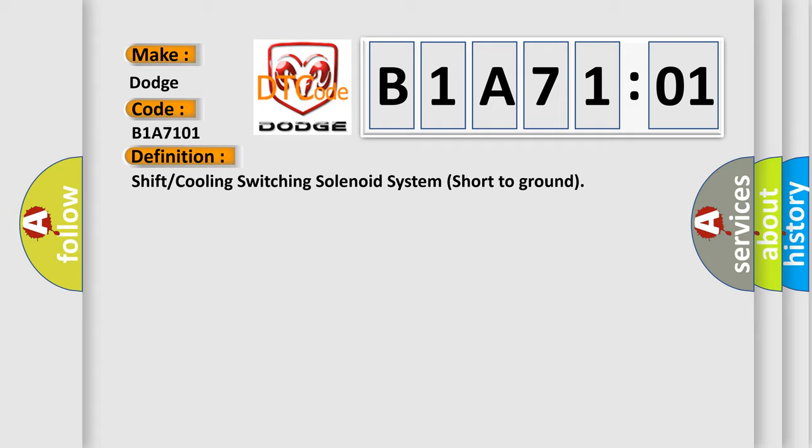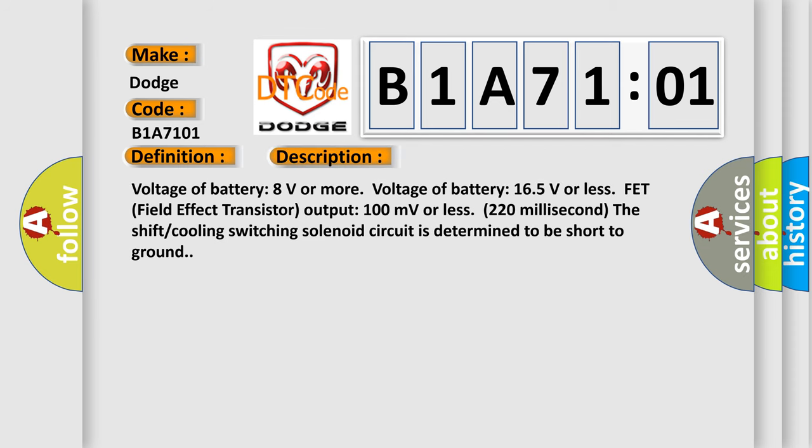And now this is a short description of this DTC code. Voltage of battery 8 volts or more, voltage of battery 16.5 volts or less, FET (field effect transistor) output 100 millivolts or less, 220 milliseconds. The shift cooling switching solenoid circuit is determined to be short to ground.